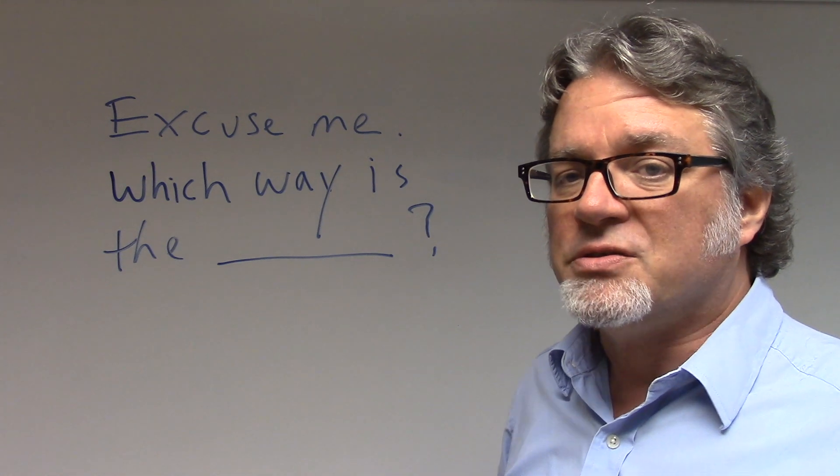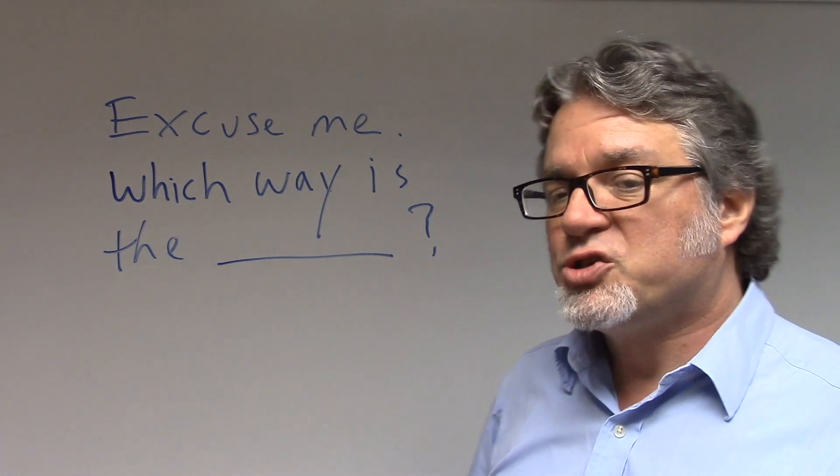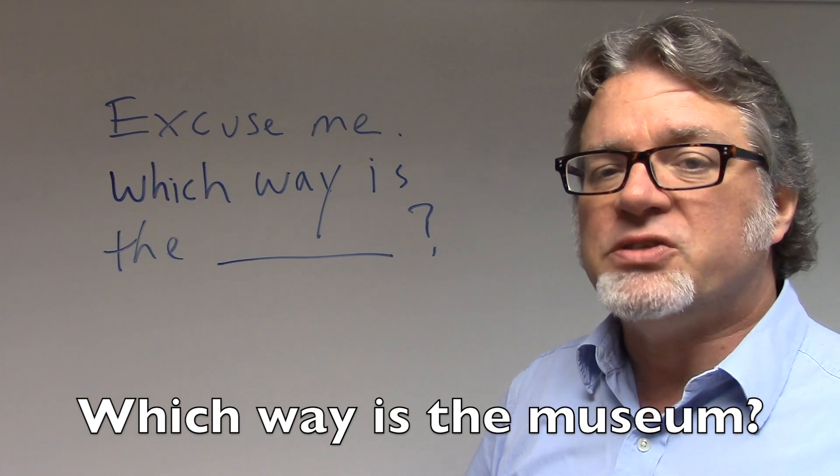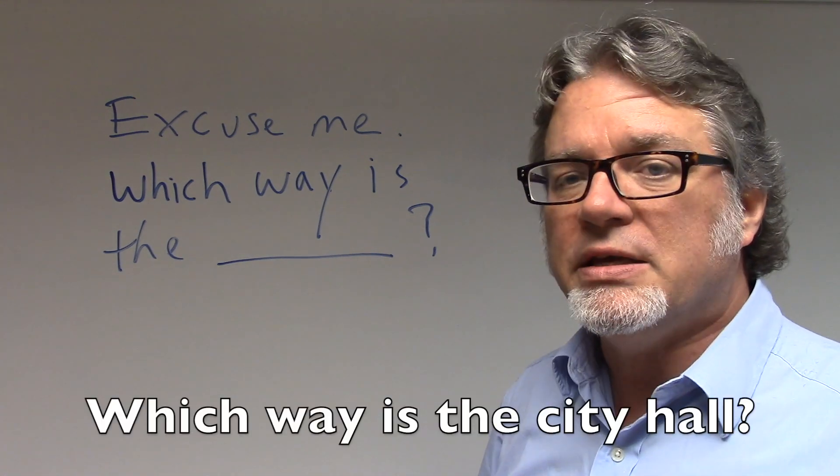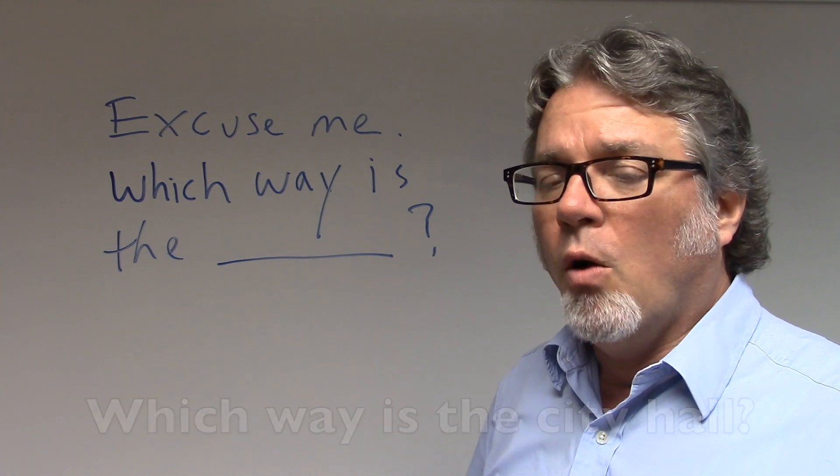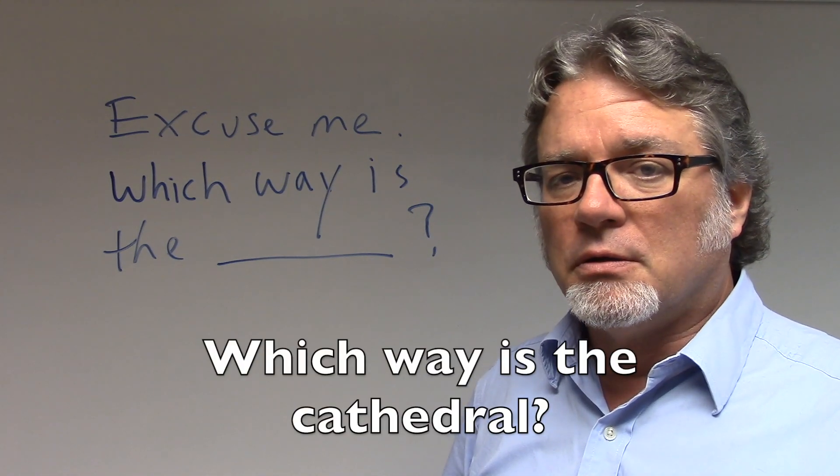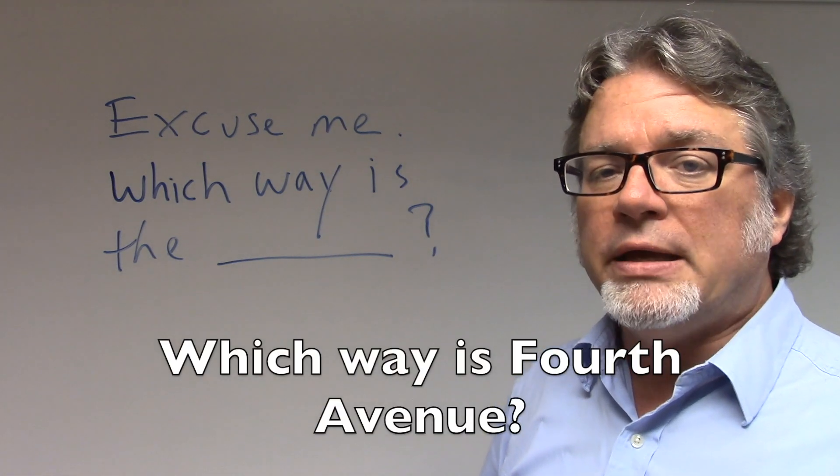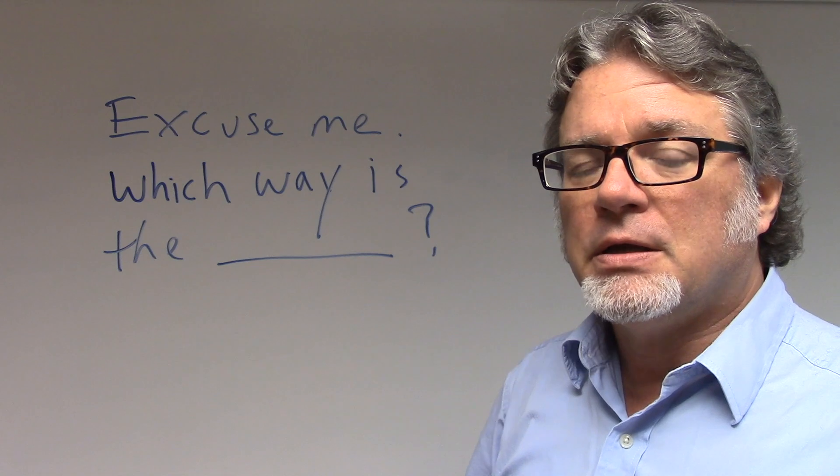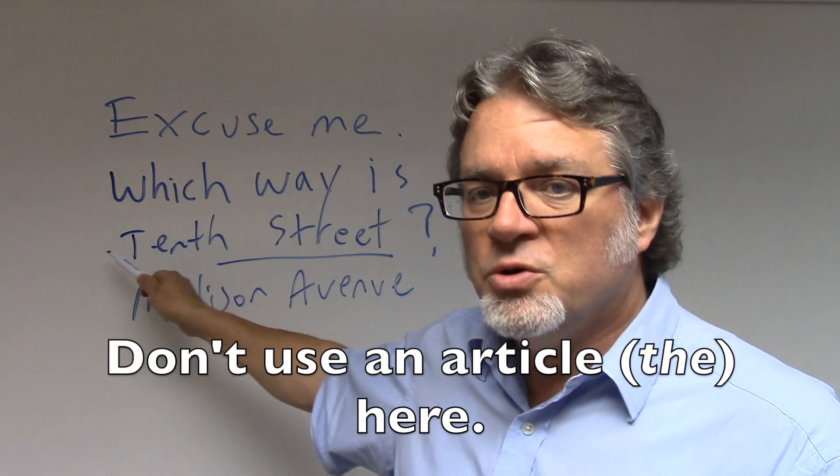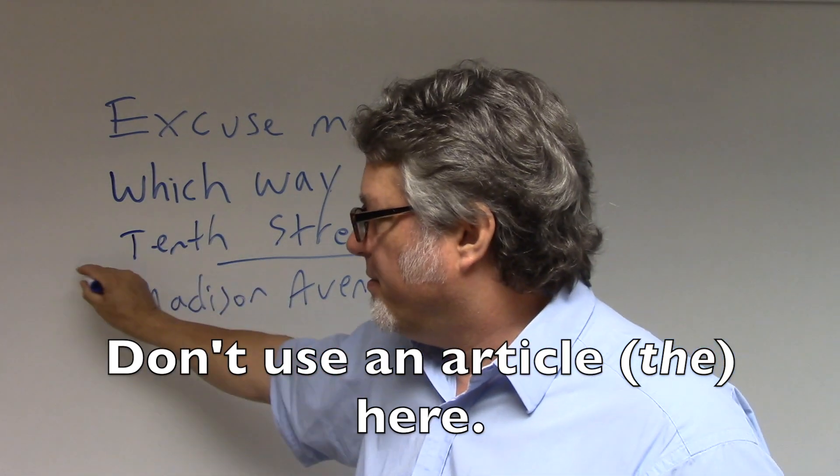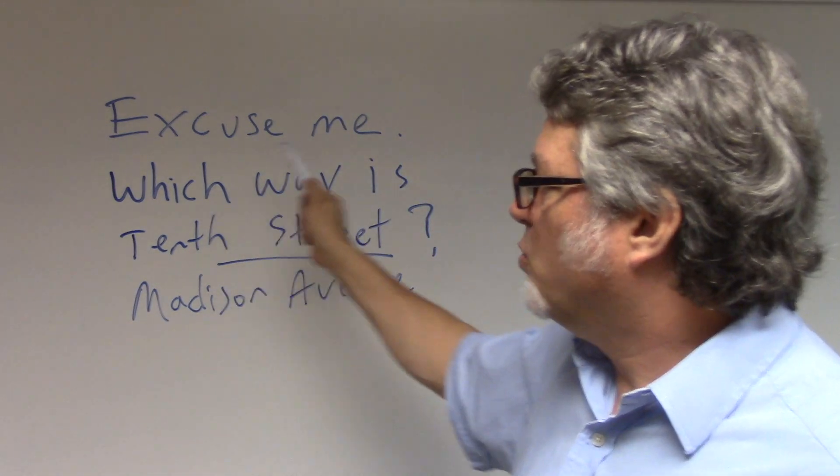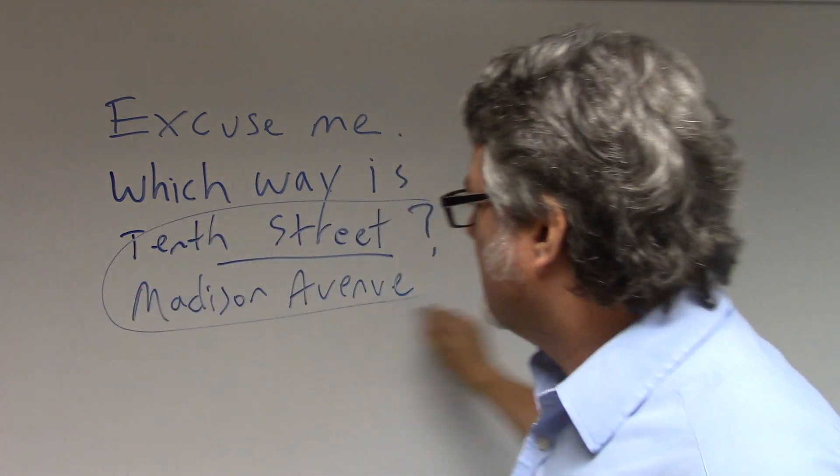If you want simple directions, ask your question like this. Excuse me, which way is the, and then the place. Which way is the museum? Which way is the city hall? Which way is the cathedral? Which way is 10th Street? Which way is 4th Avenue? So you don't use an article here. Don't use 'the' or 'a' here. Just ask the question like this: which way is, and then this would be the street.